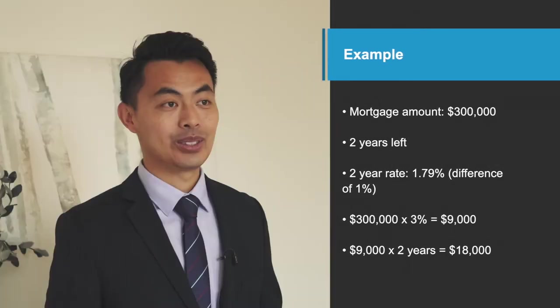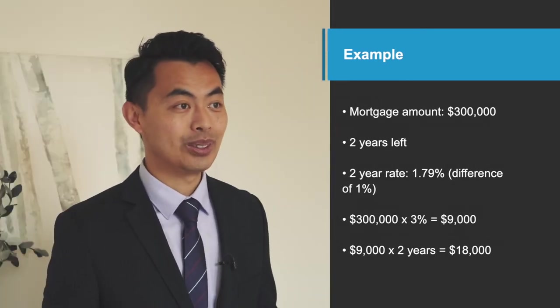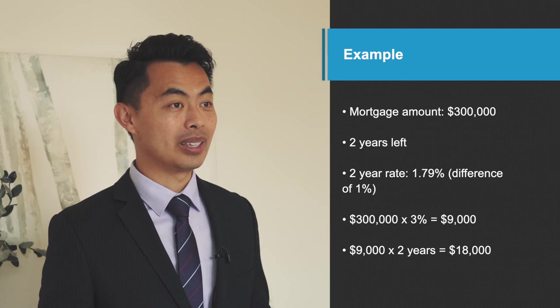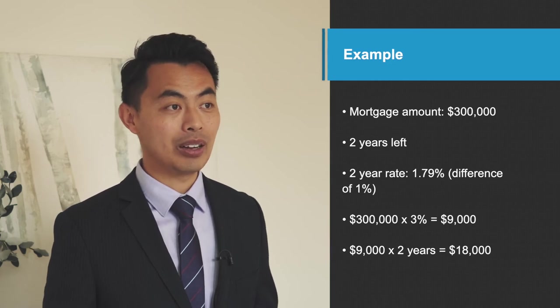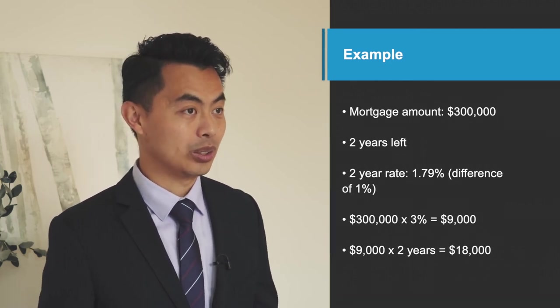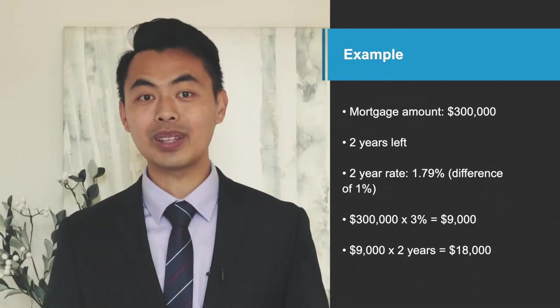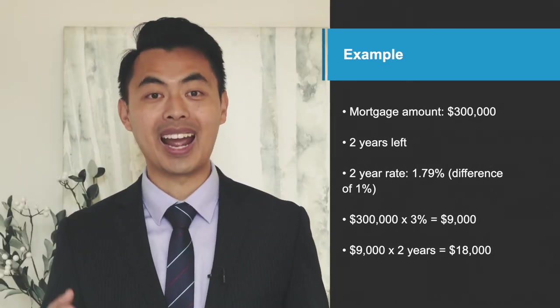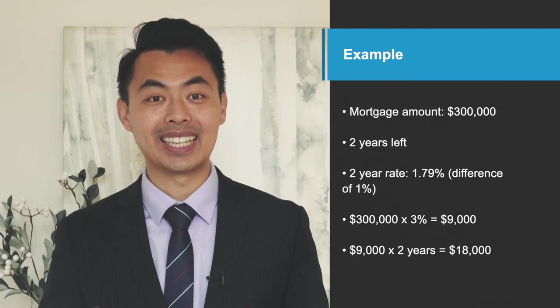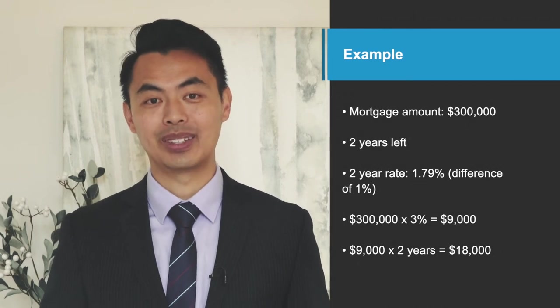So for example, the penalty on this five-year fixed mortgage term is a whopping $18,000. That's quite a lot of money.